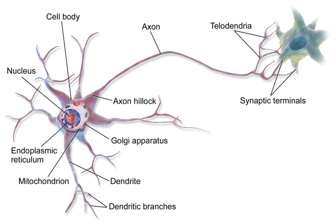GABAergic neurons release gamma-aminobutyric acid (GABA), one of two neuroinhibitors in the central nervous system, along with glycine. GABA gates anion channels that allow Cl⁻ ions to enter the postsynaptic neuron. Cl⁻ causes hyperpolarization within the neuron, decreasing the probability of an action potential firing as the voltage becomes more negative, since a positive voltage threshold must be reached. GABA is synthesized from glutamate neurotransmitters by the enzyme glutamate decarboxylase.